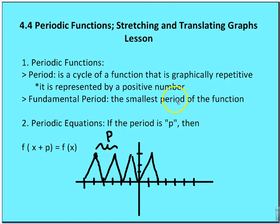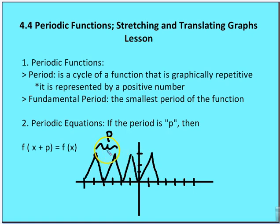Let's talk about some vocabulary you need to know about periodic functions. A periodic function is a function that repeats itself repetitively over a given period — there's a given cycle for the function, and that cycle occurs every x unit amount of value. The period is a cycle of a function that's graphically repetitive, and is represented by a positive number.